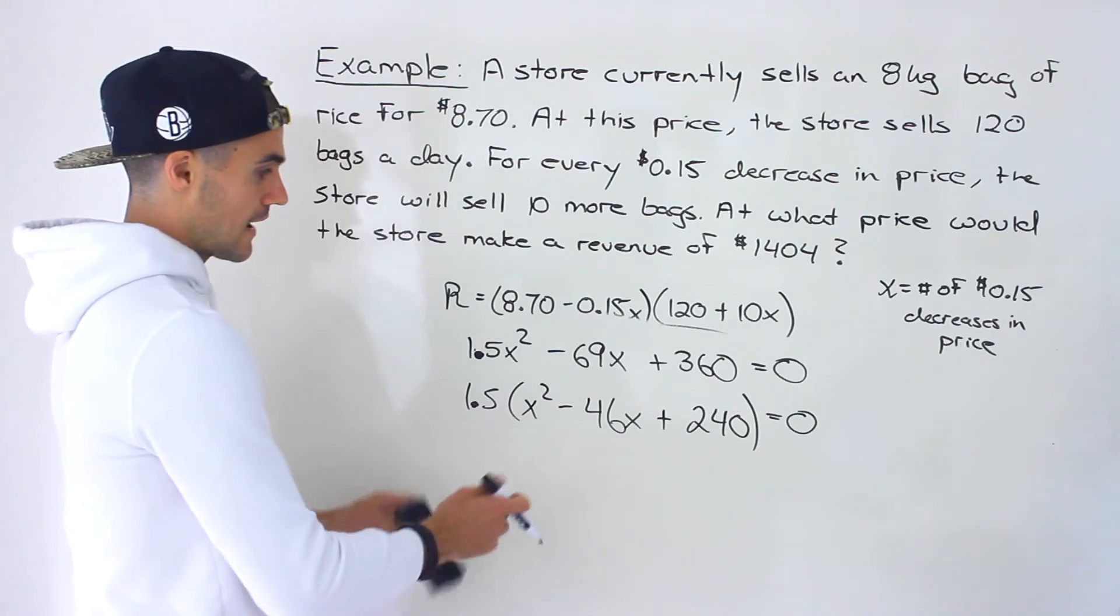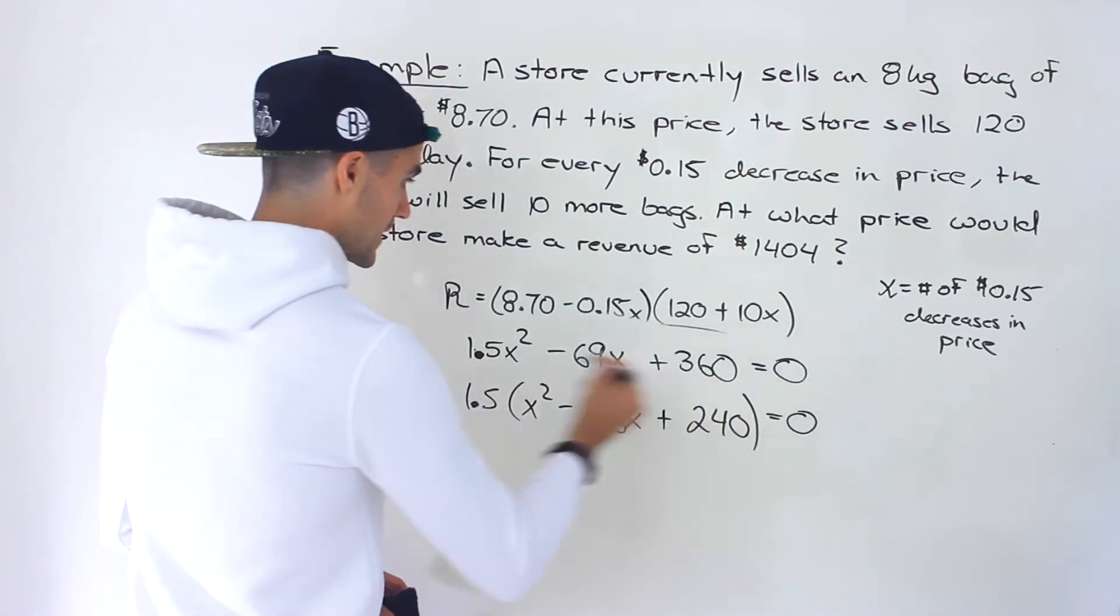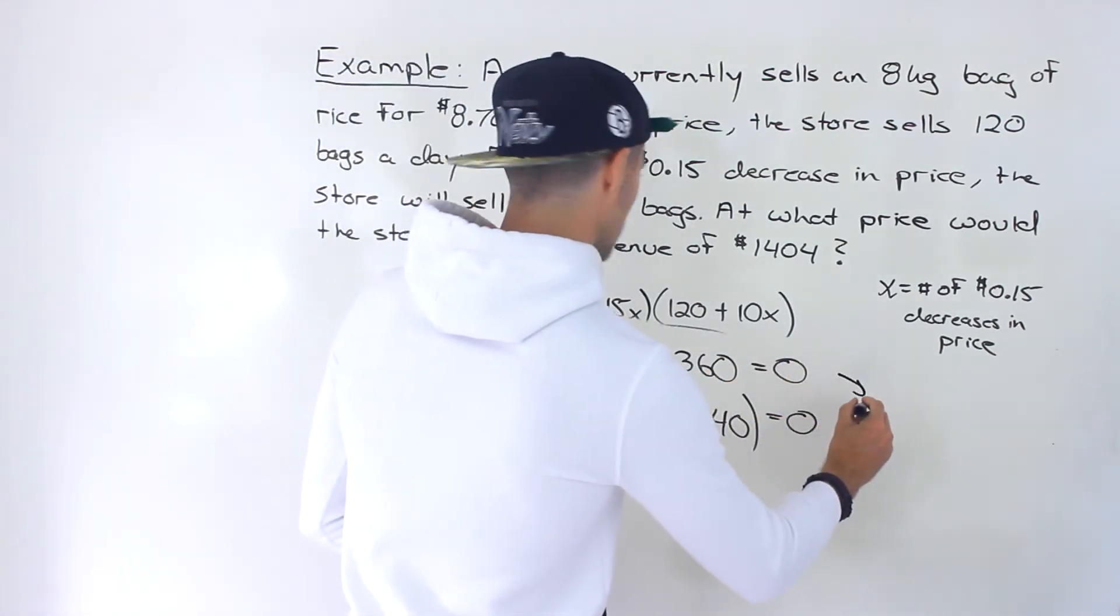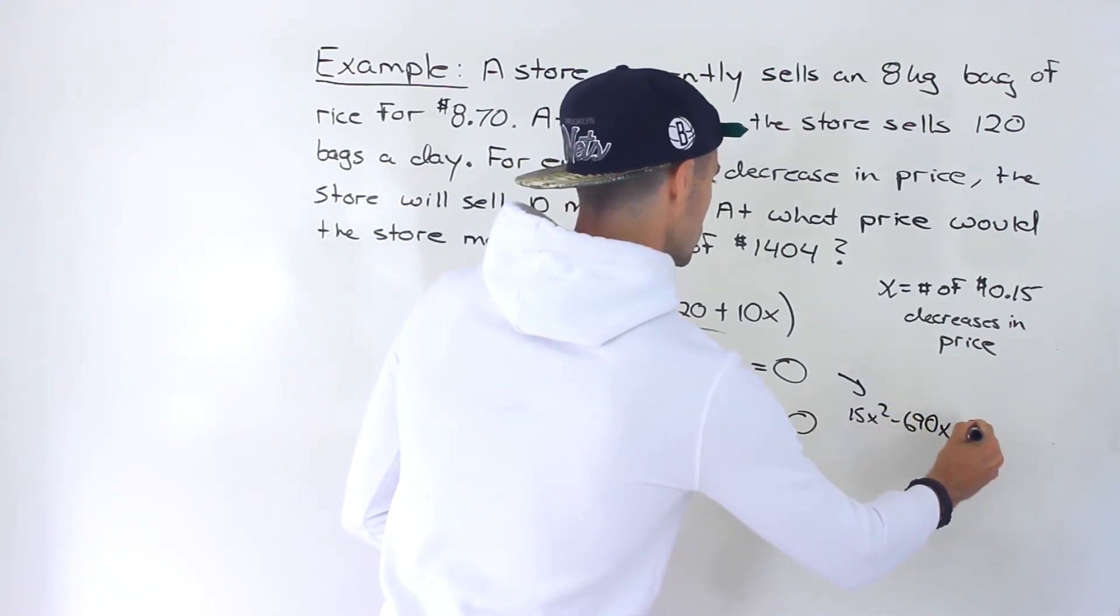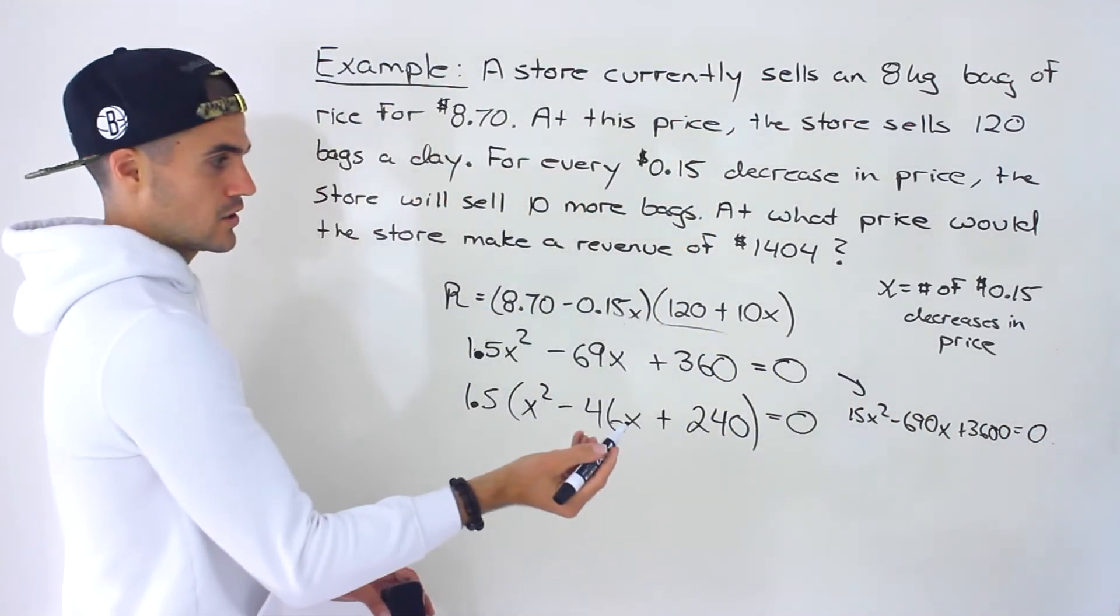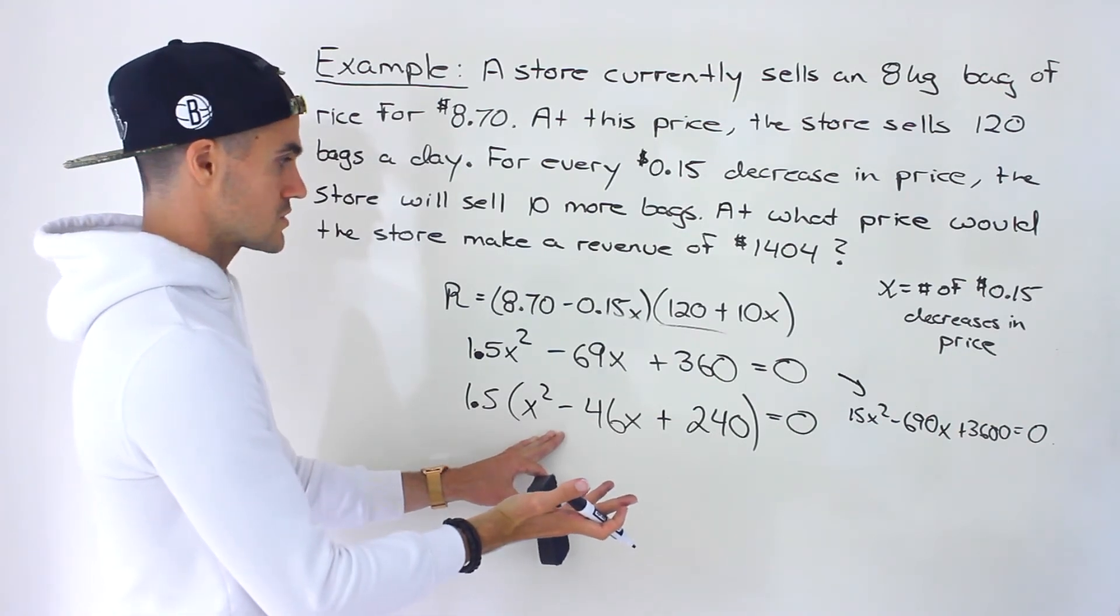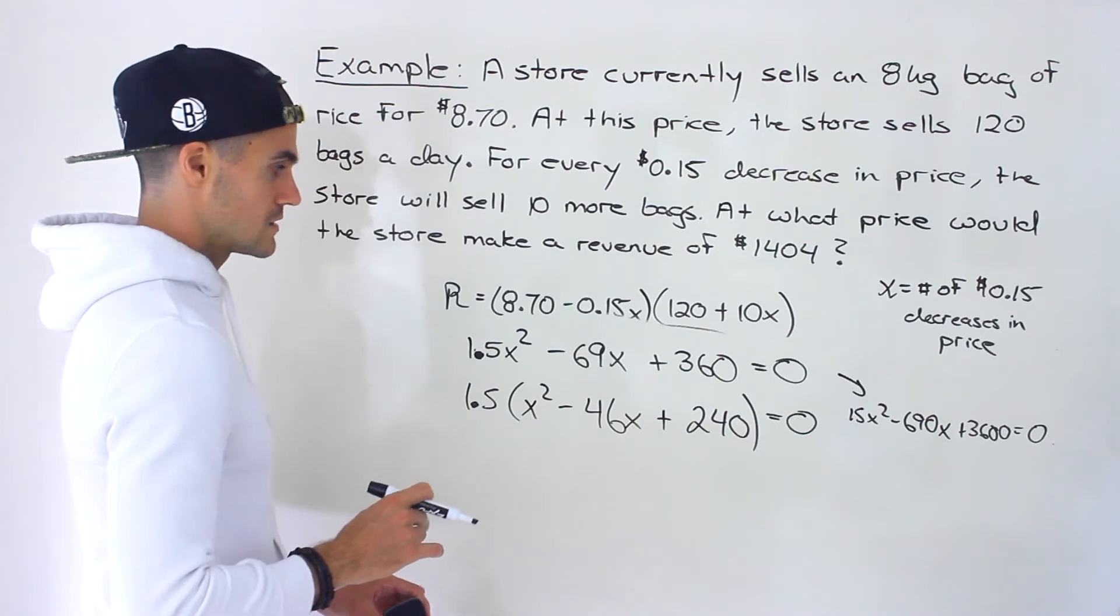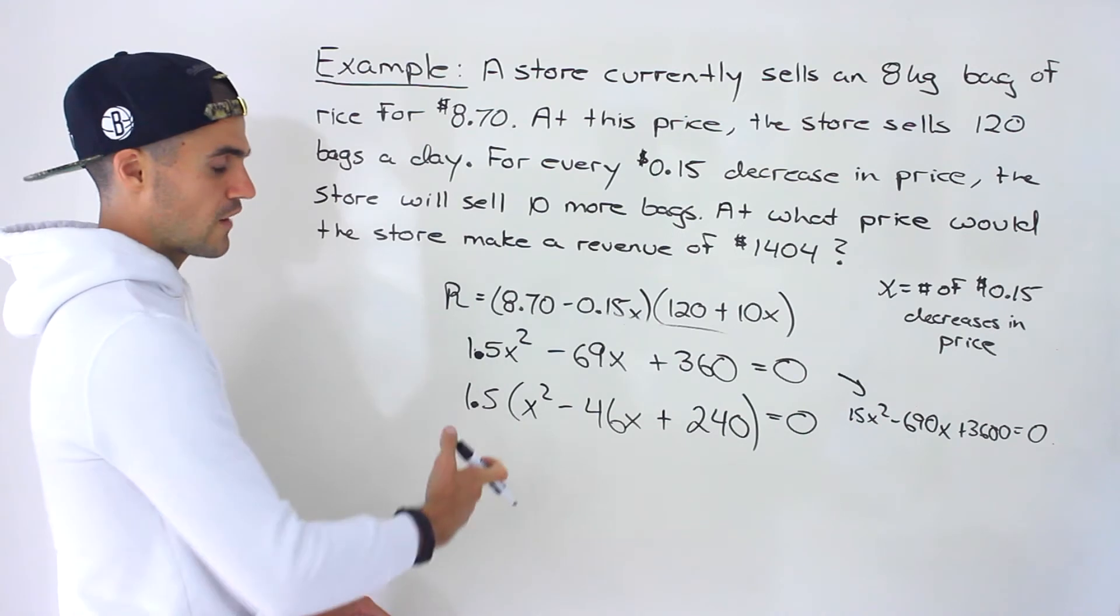However, if that wasn't going to happen, then you'd want to multiply everything by 10. And you can still do that here. So if we multiply everything by 10, we'd end up with 15x squared minus 690x plus 3,600. And you can solve that equation. The solutions to that equation are going to be the same solutions to this equation. So you could still go about it that way if you want.